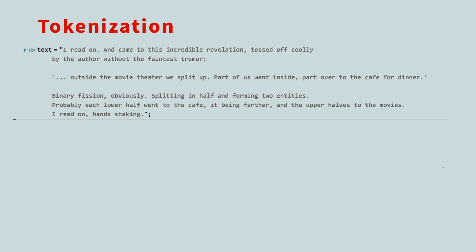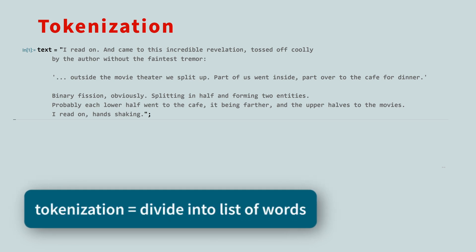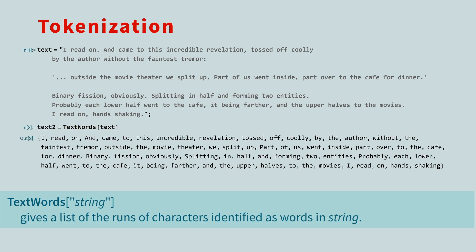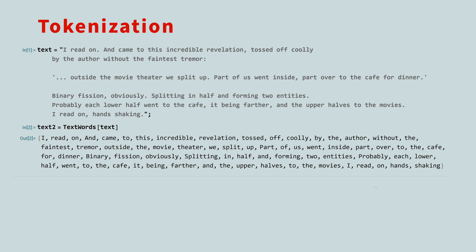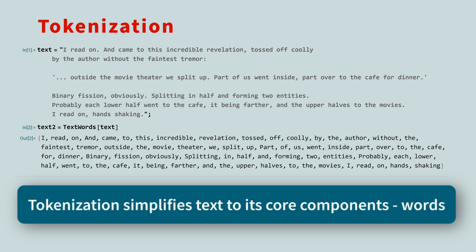A common preprocessing step is to divide the text into a list of words. This is called tokenization. In the Wolfram language, the built-in function TextWords will do this. Notice that the list does not contain any punctuation — no colons, commas, periods, quotes, or ellipses. It's just a sequence of words. This is part of what makes tokenization an important preprocessing step. It simplifies text to its core components: words.